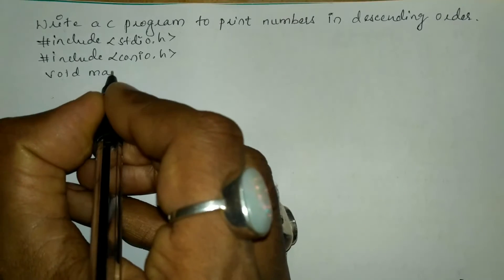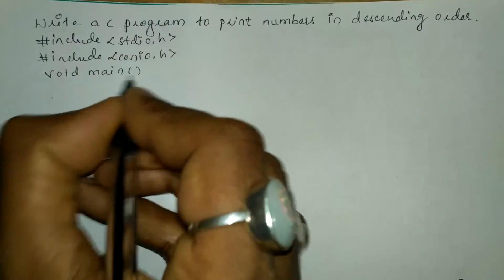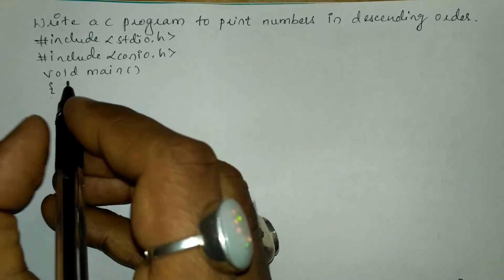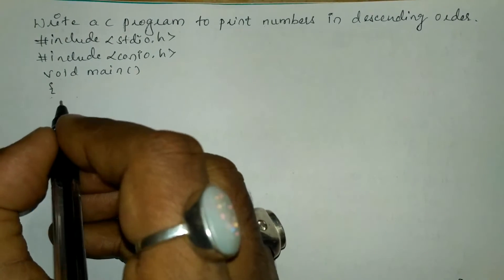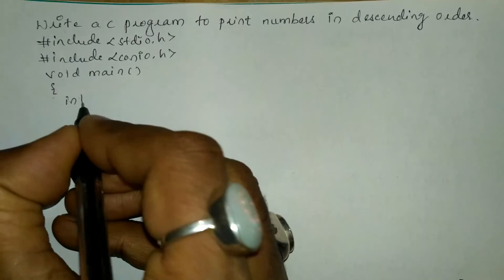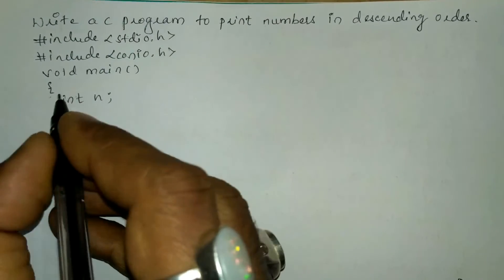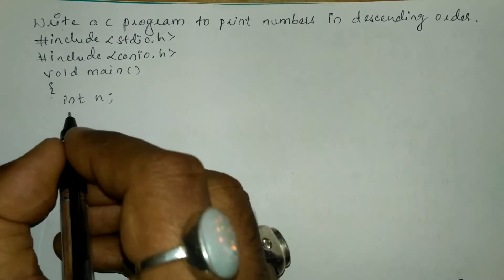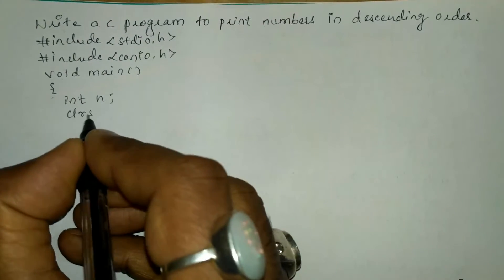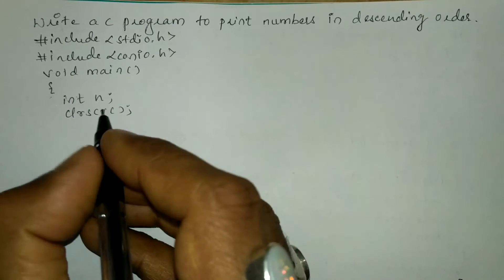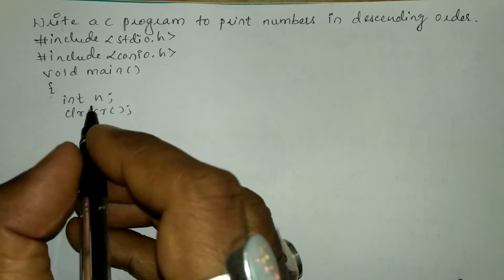Now I'm going to write the void main function with a curly open brace, and here I'm going to declare a variable n of type integer, and then I'm going to write the clrscr function which is used to clear the screen.